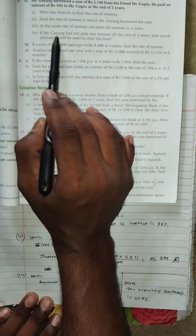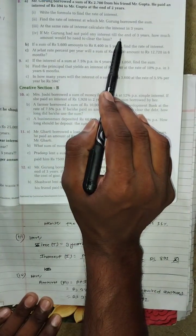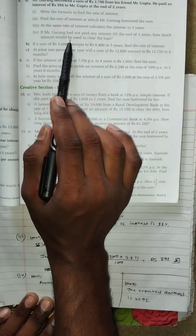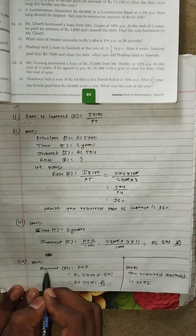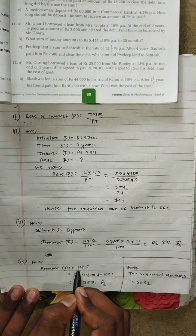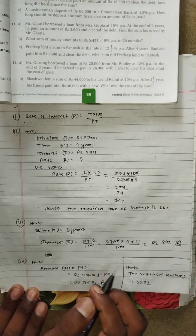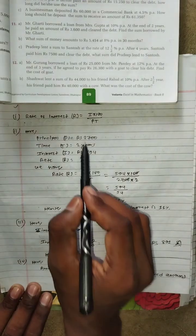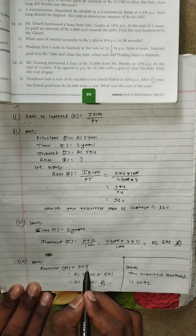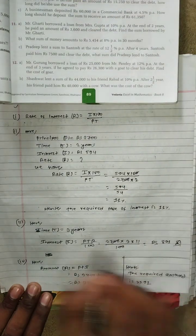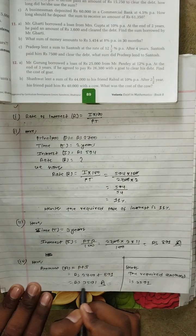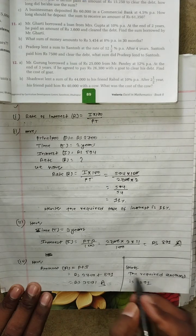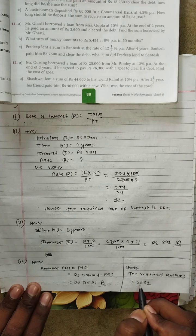If Mr. Gurung had not paid any interest till the end of three years, how much amount would he need to clear the loan? Amount equals principal plus interest — 2700 plus 891. The required amount is RS 3591.